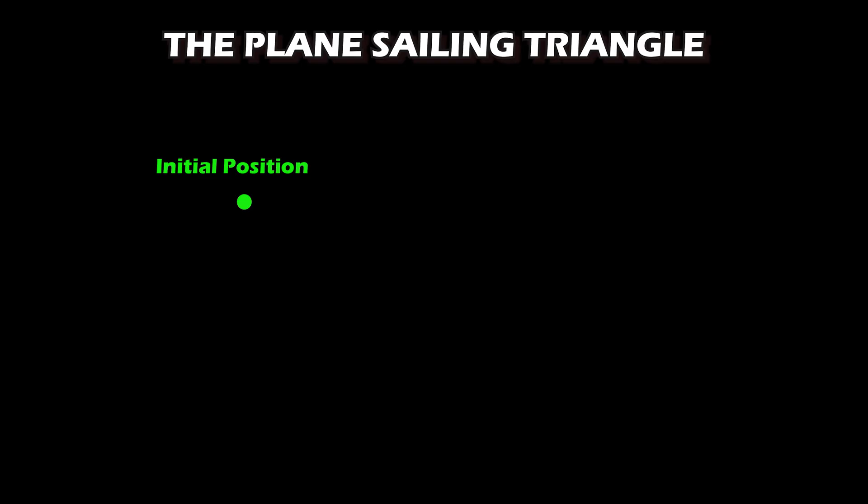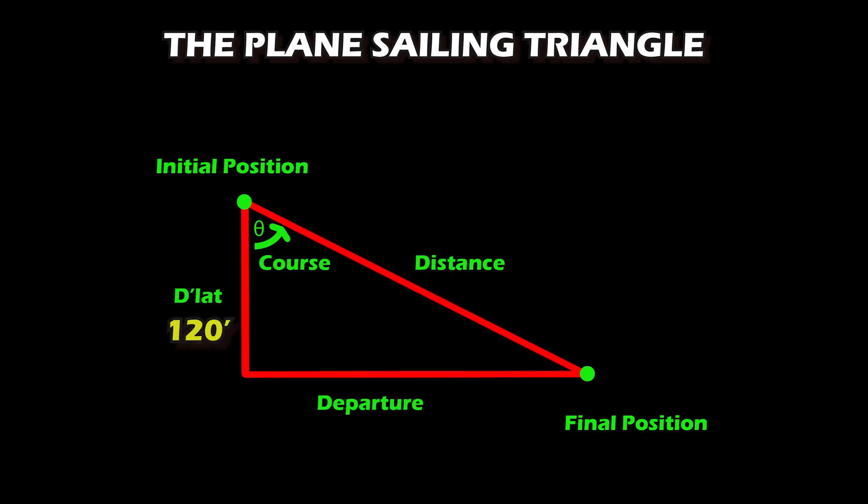Since the d-lat is south, draw a line downward from the initial position. Next, because the d-long is east, draw a line to the east from the end of the d-lat line. Your right-angle triangle is now complete. We just need to label it correctly.